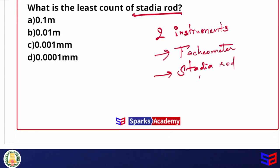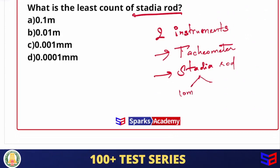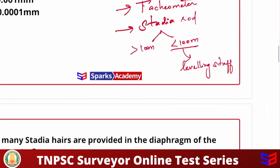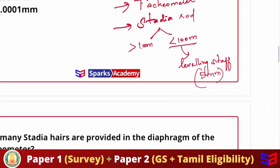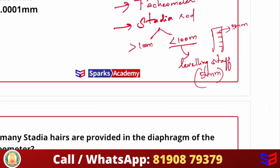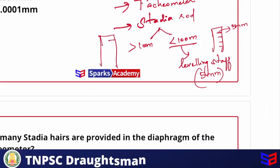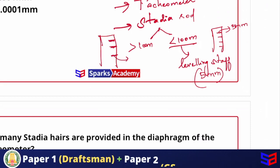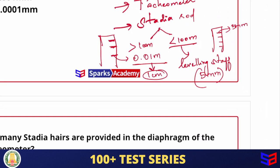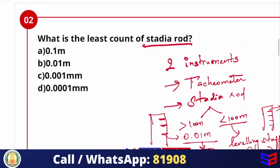The stadia rod has a least count. If the distance is greater than 100 meters, we use a stadia rod. The graduations are 0.01 meter, that means 1 centimeter. So the least count of the stadia rod is always 0.01 meter. The answer is option B.